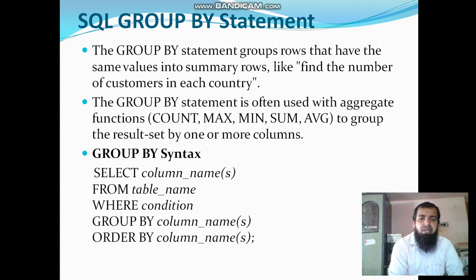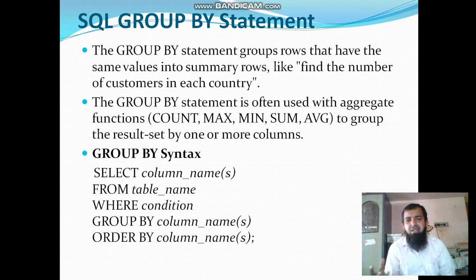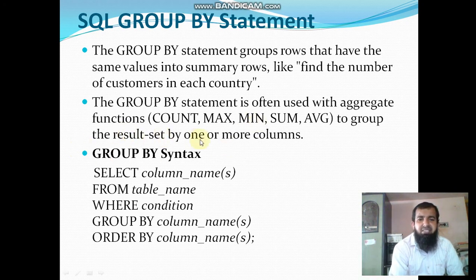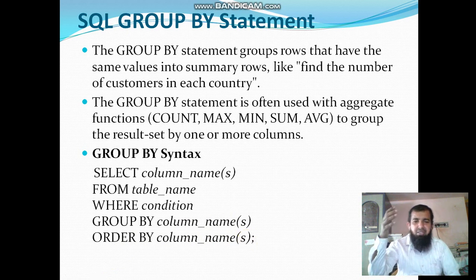The GROUP BY statement is often used with aggregate functions. In previous videos, aggregate functions like COUNT, MAX, SUM, and AVG were explained. The GROUP BY statement groups the result set by one or more columns. The syntax is: SELECT column_name FROM table_name WHERE condition GROUP BY column_name ORDER BY column_name. You use ORDER BY when you want to display results in ascending or descending order.